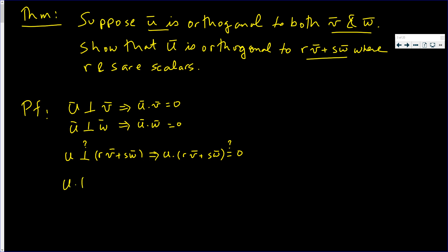So u·(rv + sw). Well, this is one vector plus another vector, and we showed in an earlier video that the dot product of a sum of vectors is the sum of the dot products: u·rv + u·sw.